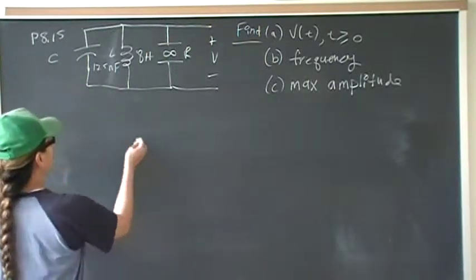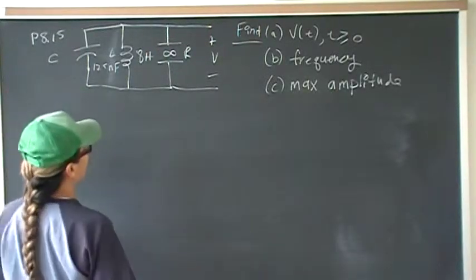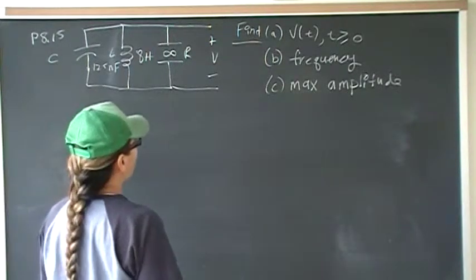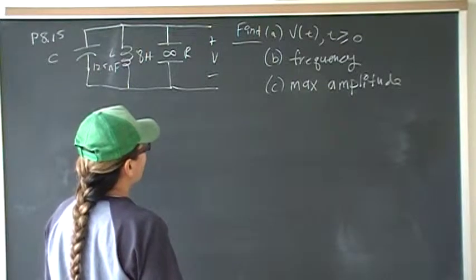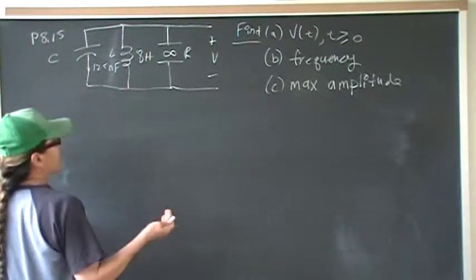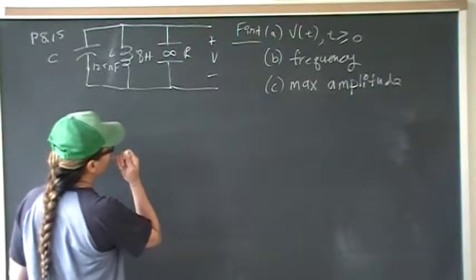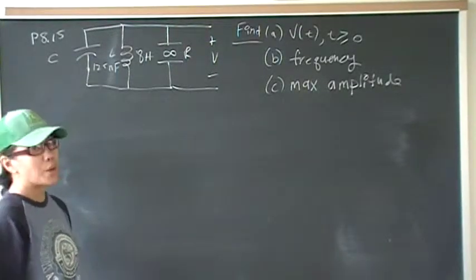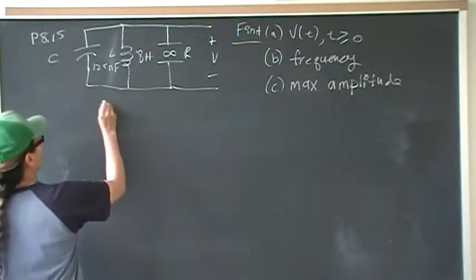Let's find V of t. The first thing we have to do is we have to find the damping in order to know what kind of outcome, in order to know what kind of equations to use for the coefficient or what kind of shape the general equation will take.